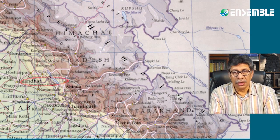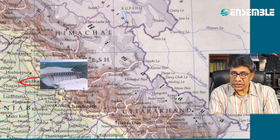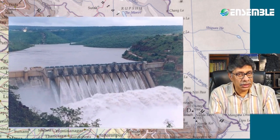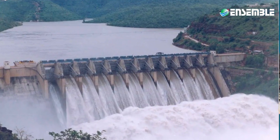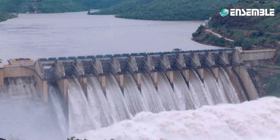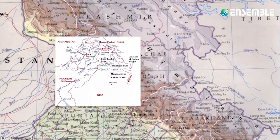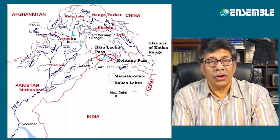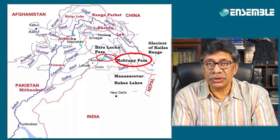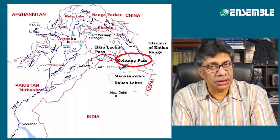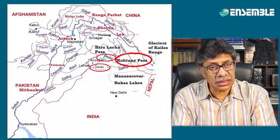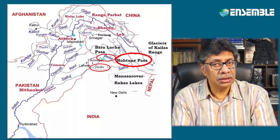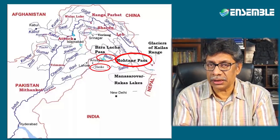The Bhakra Nangal dam has been constructed on the Satlaj. The waters of the Satlaj are allocated to India under the Indus Water Treaty between India and Pakistan and are mostly devoted to irrigation canals in India. The Beas river, also known as Vipasha, originates near Rohtang Pass and is one of the rivers that lies almost completely in India. It meets the Satlaj near Harike, forming a wetland called the Harike Wetland.